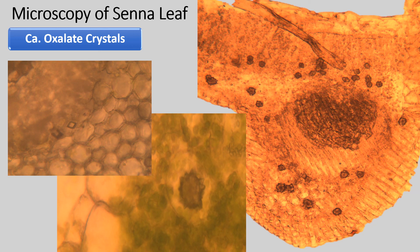Calcium oxalate crystals of Senna: Senna has a greater amount of rosette calcium oxalate crystals. Rosette means the rose petal-like arrangement of the crystal, also known as paraffinoid crystals. You can also find some prismatic calcium oxalate crystals in the parenchyma, randomly scattered.